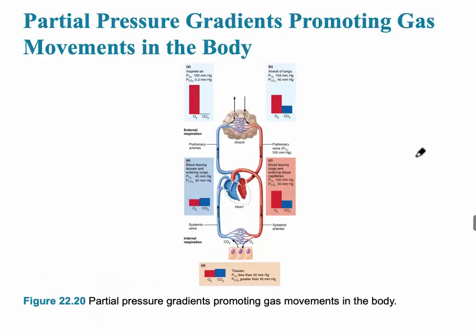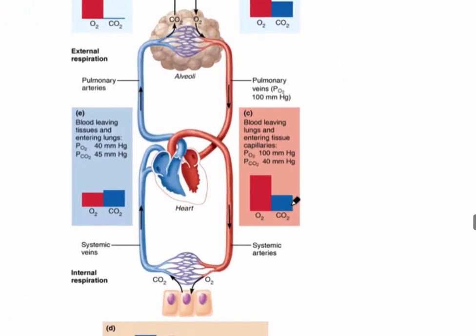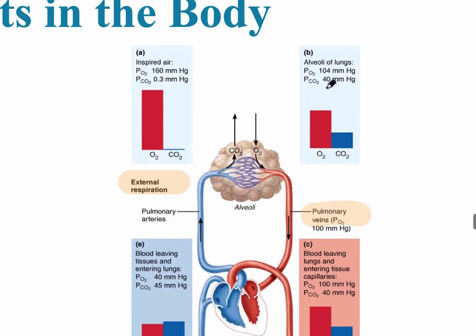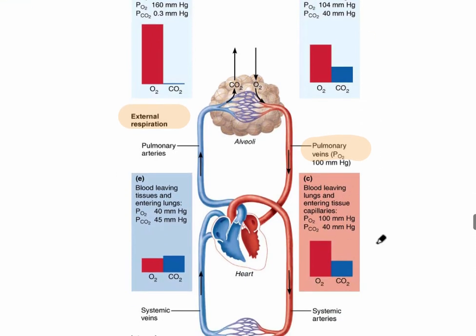This slide shows the partial pressure gradients for gas movements. Looking at external respiration first: carbon dioxide is leaving the blood, so CO2 decreases in the pulmonary veins, with a partial pressure of 40 mmHg. In the venous blood — the deoxygenated blood — the partial pressure of CO2 is much higher, but it's not as steep a difference as for oxygen; it only goes from 45 to 40. The main reason is how carbon dioxide travels in the blood.